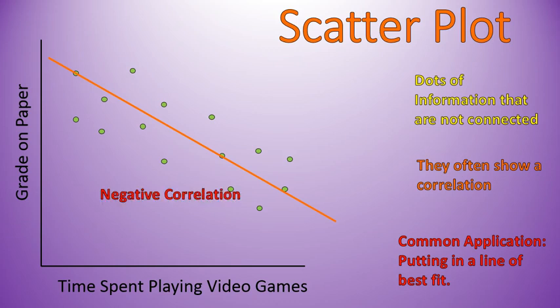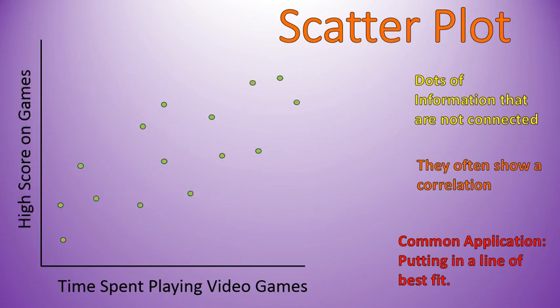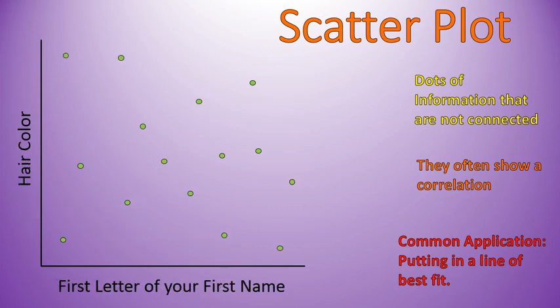In this case it's called a negative correlation because the slope is going down. A positive correlation would be the high score on a video game versus the time spent playing — that line of best fit has a positive slope. And something that might have no correlation whatsoever would be your hair color versus the letter of your first name — that information could be all over the place with no correlation. There's a lot of information that has no correlation, and that's often shown effectively using scatterplots.